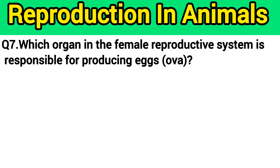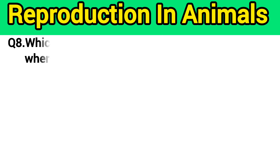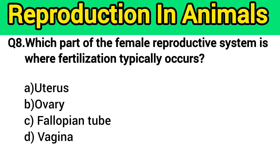Question number 7: Which organ in the female reproductive system is responsible for producing eggs? The right answer is option B — ovary. Question number 8: Which part of the female reproductive system is where fertilization typically occurs? The right answer is option C — the fallopian tube.